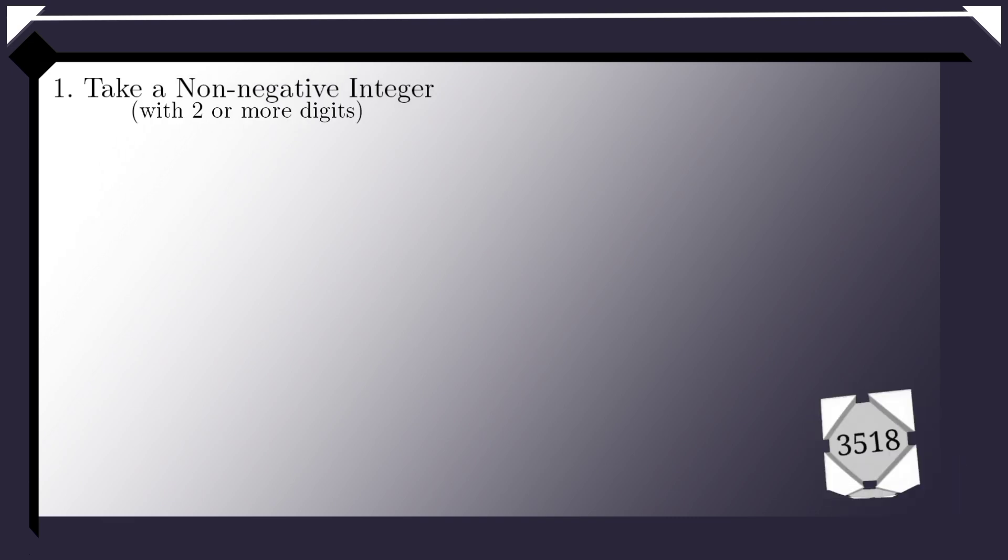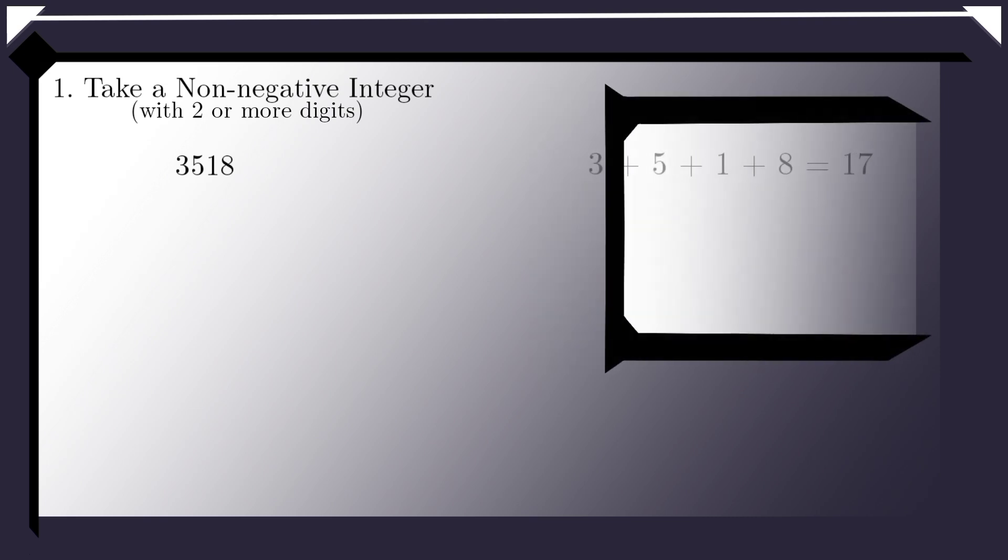To understand what the rule for this sequence is, let's take a non-negative integer. We've got 3518. This number has four digits. Now, there are many things we can potentially do with the digits of this number. For example, we can find the sum or product of all of them, or reverse them.